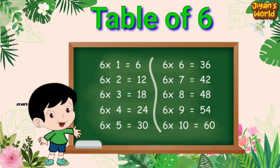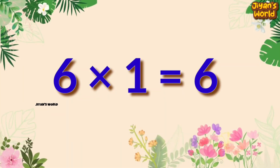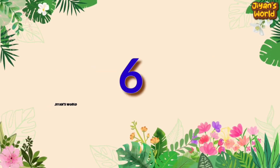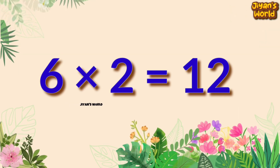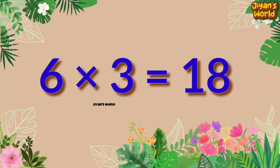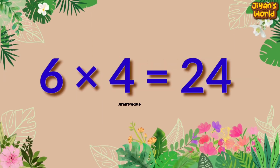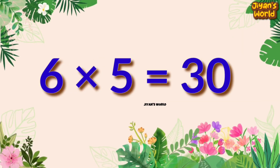So let's start. 6 1s are 6, 6 2s are 12, 6 3s are 18, 6 4s are 24, 6 5s are 30.